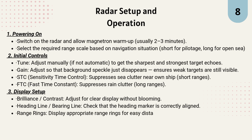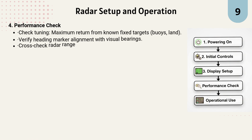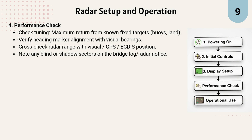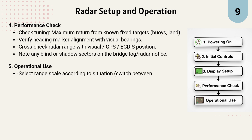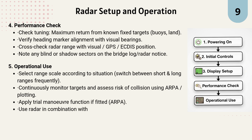Step 3 — Display setup: Adjust brilliance and contrast, align the heading marker, display range rings, and set EBL and VRM for target measurement. Step 4 — Performance check: Check tuning using fixed targets, verify heading marker alignment with visual bearings, cross-check radar ranges with GPS or ECDIS, and record blind or shadow sectors in the bridge log. Step 5 — Operational use: Change range scales frequently, continuously monitor targets, and use ARPA or plotting to assess risk of collision. Use trial maneuver if fitted.